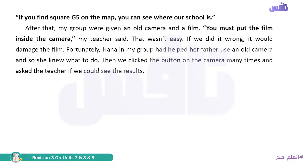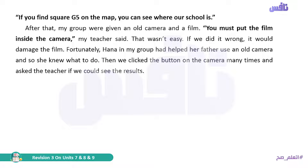After that, my group were given an old camera and a film. Note that the word 'film' in British English can be uncountable when referring to camera film, so you can say 'film' but not 'films' in that context. However, when 'film' refers to a cinema or television film, it is countable — you can say 'two films'.